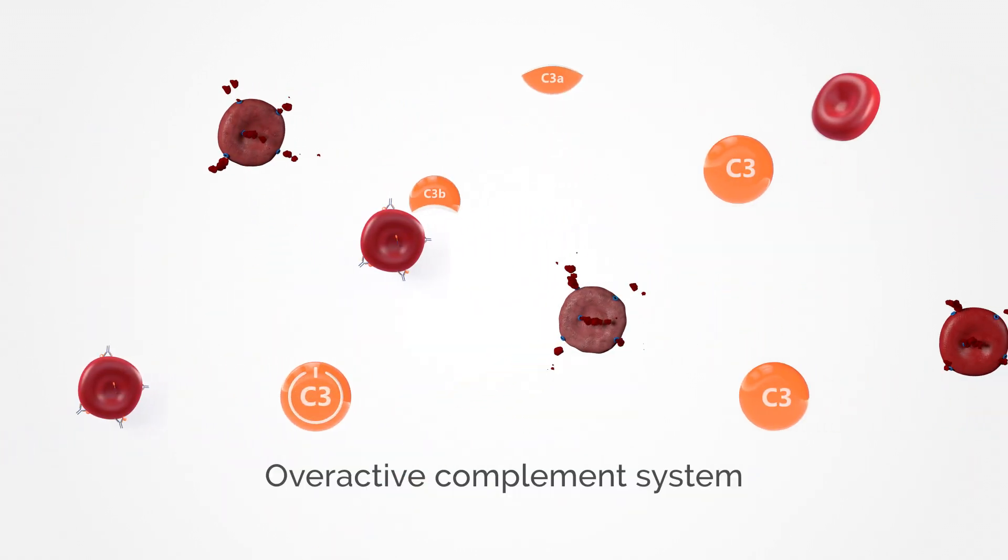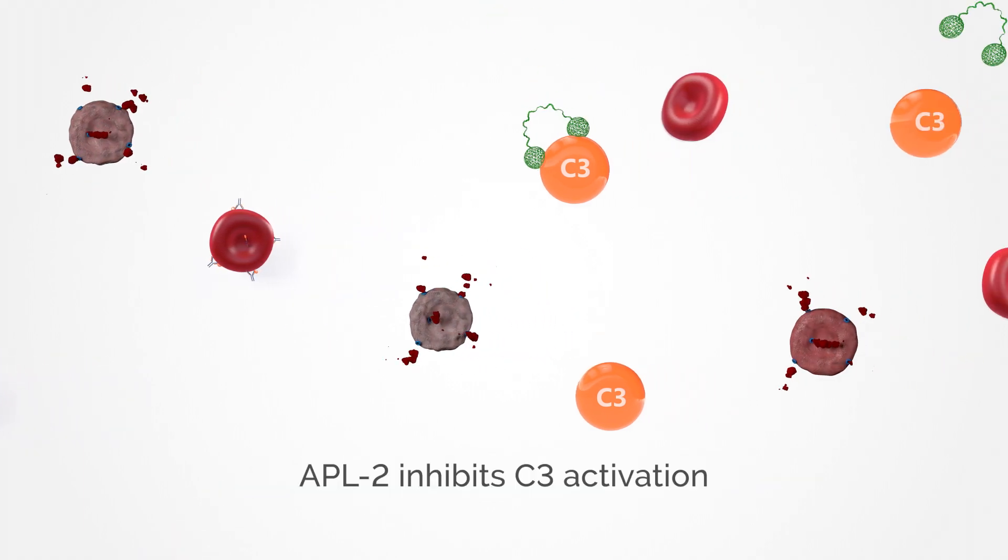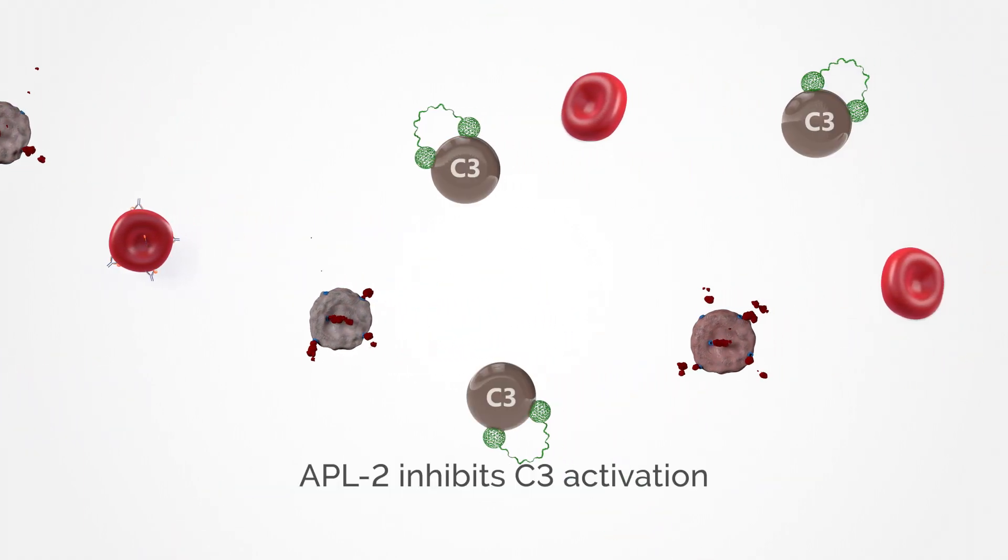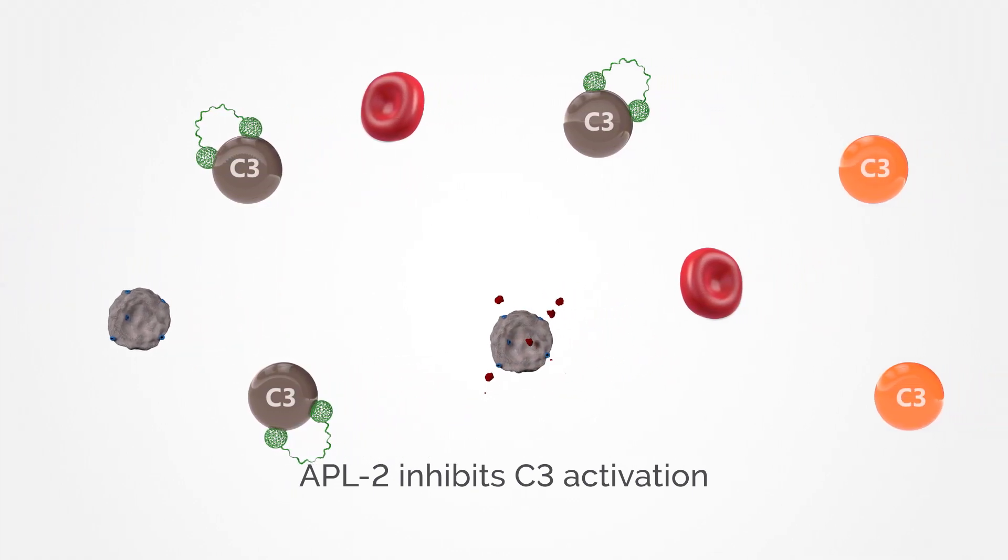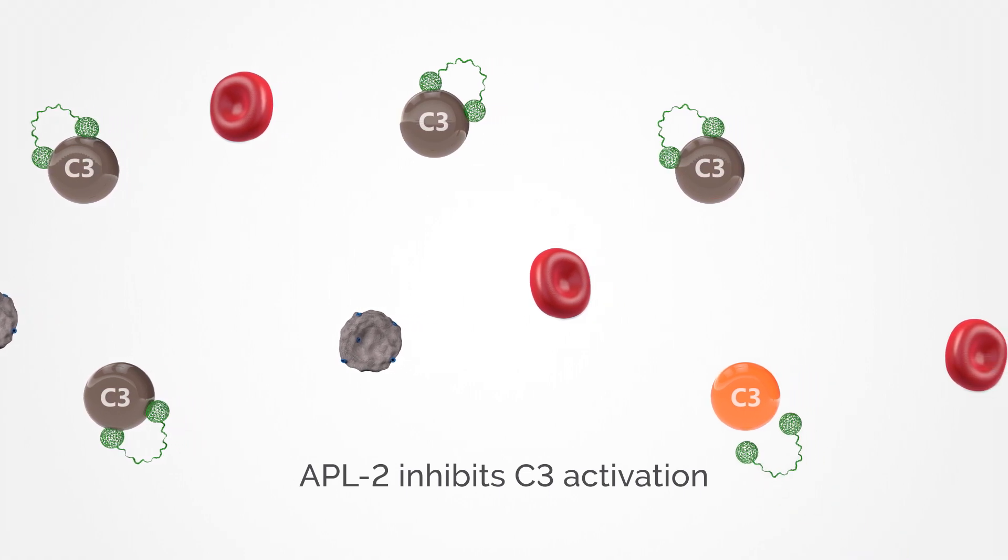The peptide portion of APL2 binds to enough C3 to prevent it from completing the complement cascade, helping the body regain control by preventing excessive complement activity, and protecting it from abnormal immune attacks.